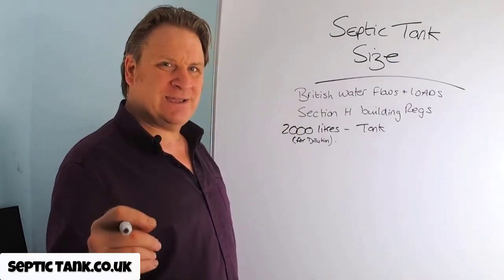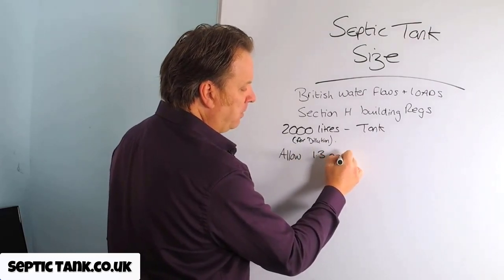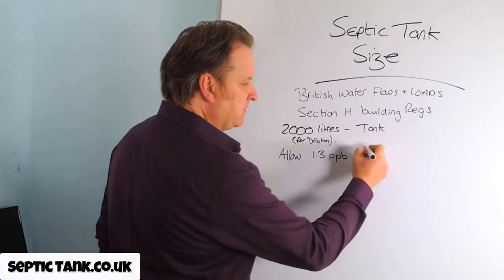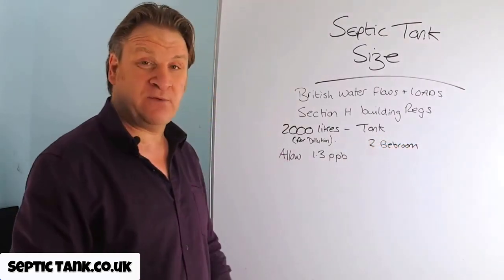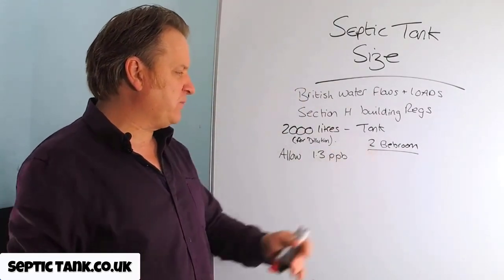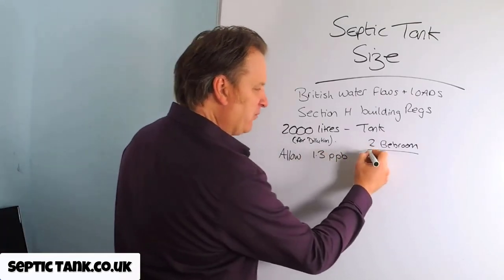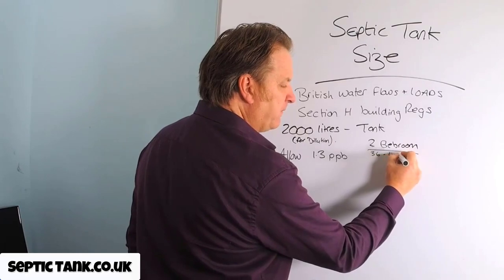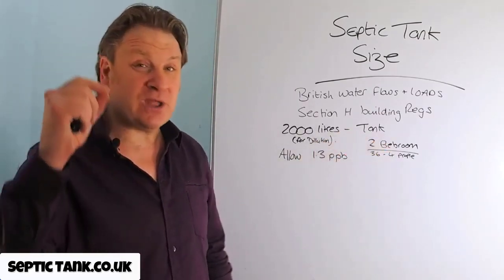The government calculator tells you that you have to allow 1.3 people per bedroom. So let's make this easy — let's say you've got a two bedroom house. This could be a new house or you could be replacing your old system. So there are two bedrooms: 1.3 plus 1.3 is 2.6. I don't know where they get the 0.3 or the 0.6 from. So two bedrooms gives you 3.6, and you'd round that up to the nearest person — so that would be four people living in that house according to the government.